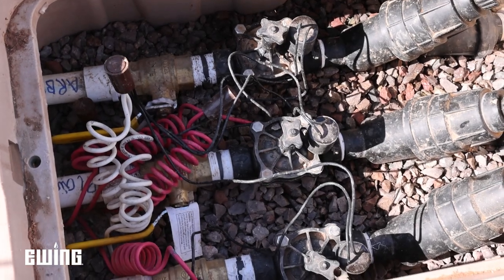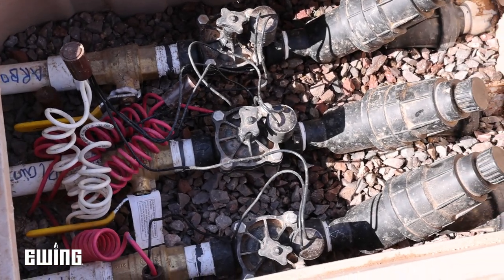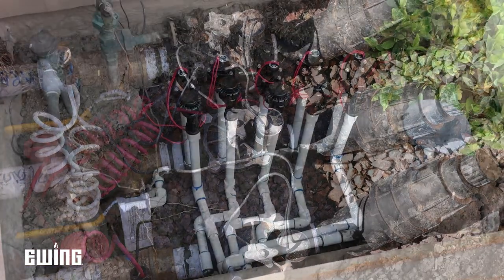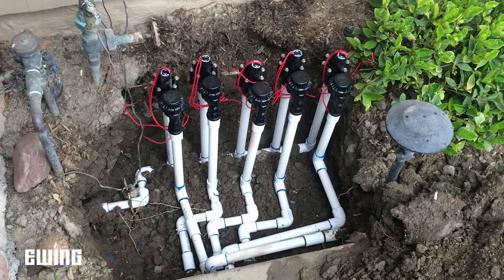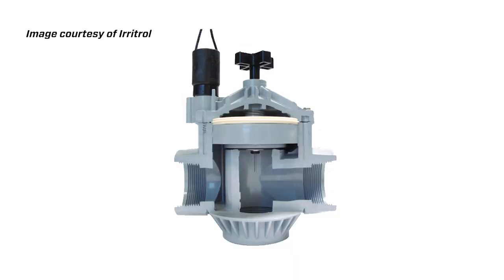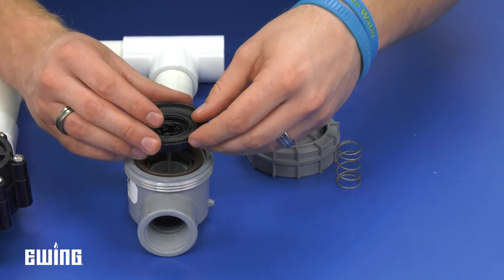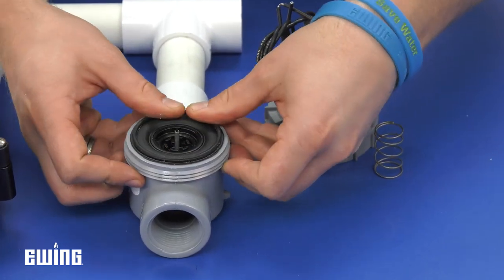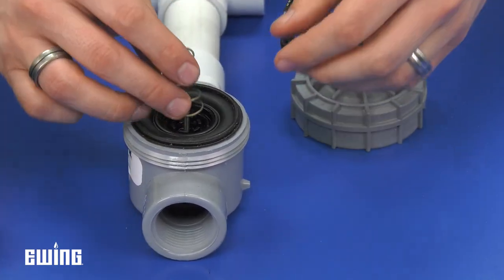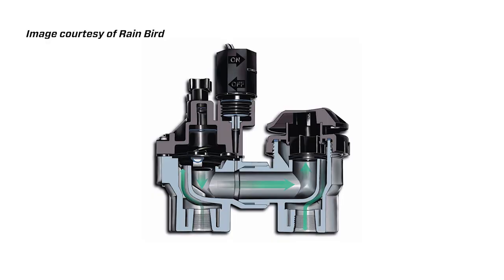Common valves used to control the flow of water to a specific zone in an irrigation system include globe and anti-siphon valves. Globe valves have a spherical shaped body with an internal diaphragm that separates the upper and lower section of a chamber within the body.